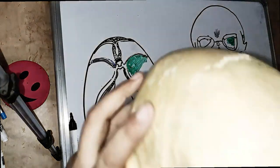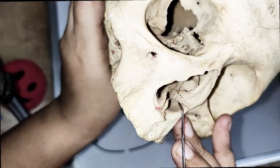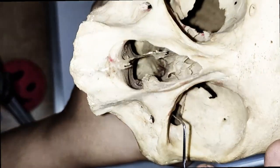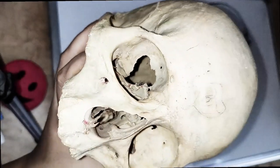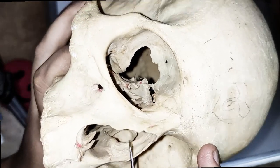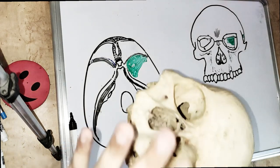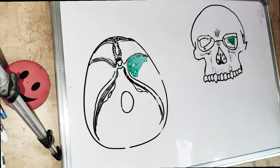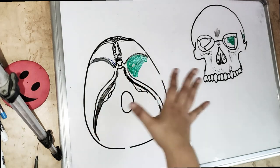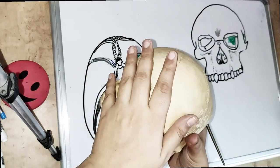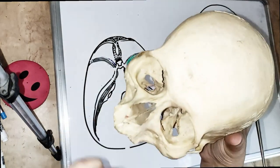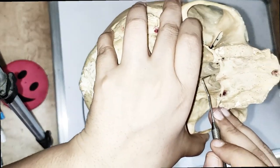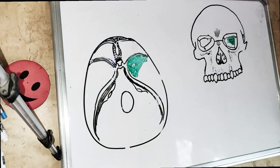We have also covered the ethmoidal bone. For the nasal structures, we have the inferior concha — looking from the front you can see the inferior conchae — and then we have the middle and superior conchae as well. So that covers the anatomy of the mid-face. We have covered the maxilla, zygomatic bone, palatine bone, vomer bone, lacrimal bone, ethmoid bone, nasal bone, and sphenoid bone.